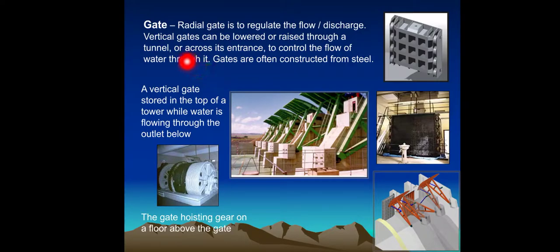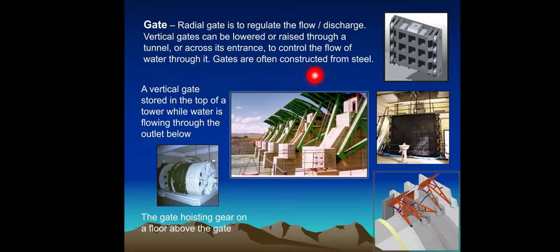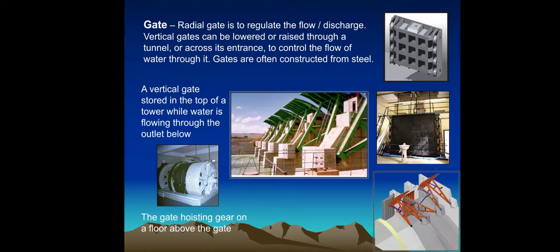Gates: A radial gate is used to regulate the flow discharge. Vertical gates can be lowered or raised through a tunnel or across its entrance to control the flow of water; gates are often constructed from steel. Vertical gates are stored at the top of a tower while water is flowing through the outlet below, with the gate hoisting gear on a floor above the gate.